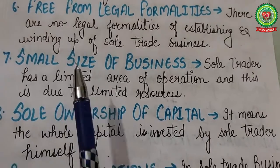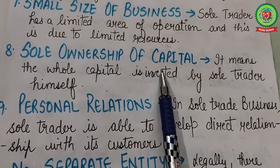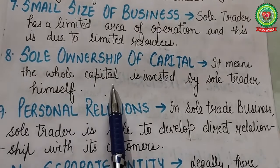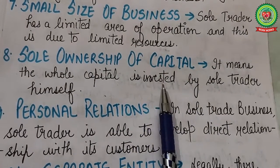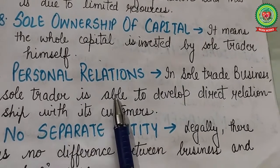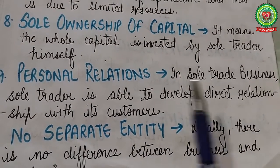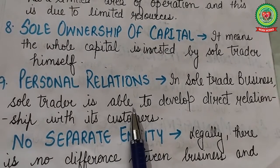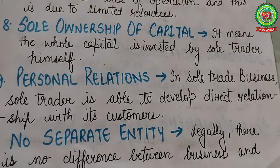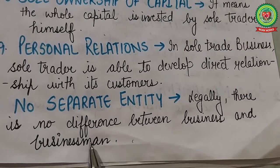Limited resources like limited capital and limited management ability mean the sole trader cannot expand his business to a large scale. Next is sole ownership of capital — in sole trade business, the capital is invested by the sole trader himself; if necessary he can take loans. Next is personal relations — the sole trader is able to develop a direct relationship with customers, as in professions such as law or medicine, which benefits the business. Next is no separate entity — legally there is no difference between the business and the businessman.